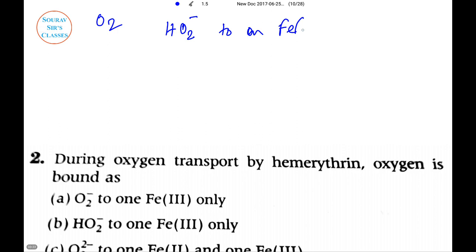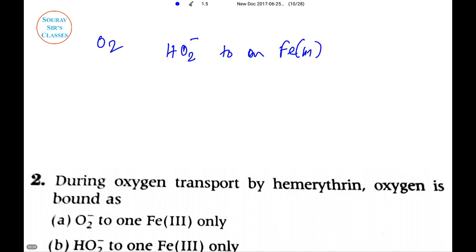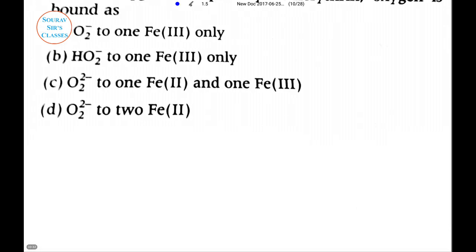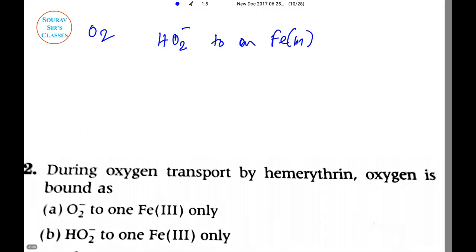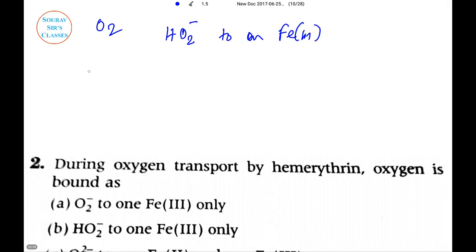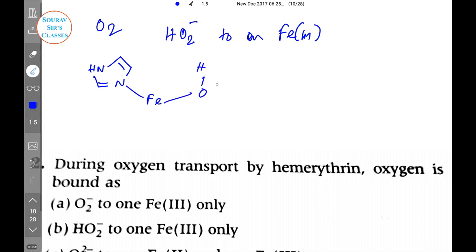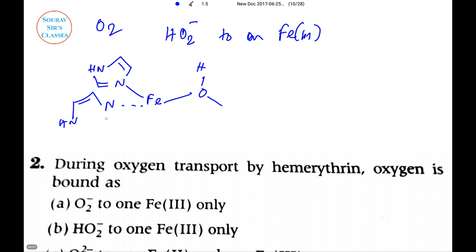It bonds to one Fe(III) only, which is shown as the basic structure. We can show this in some space. I'll draw it here. This is HN and here the nitrogen, Fe, O-H formation. Remember that if you have any problems with respect to this kind of formational idea and how to do chemical reactions and shortcuts, our bigger videos are also there.